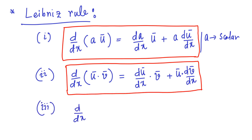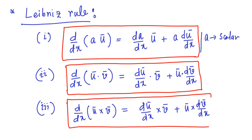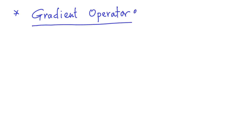In analogy, even for the cross product of two vectors, we can apply the Leibniz rule. In particular, d/dx of u cross v is equal to du/dx cross v plus u cross dv/dx. I should emphasize one important point here: while carrying out the Leibniz rules, one must remember to maintain the order, especially for the cross product.